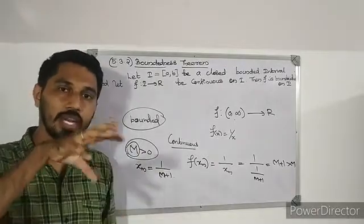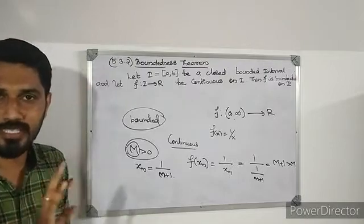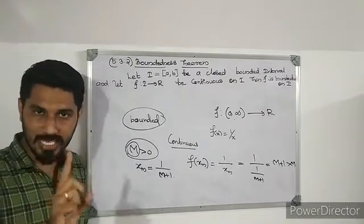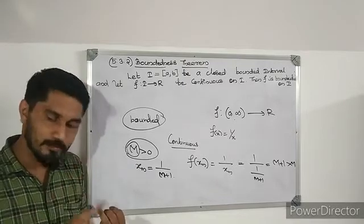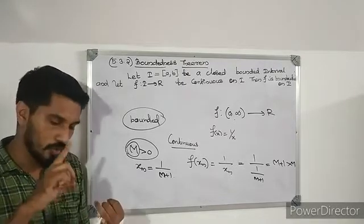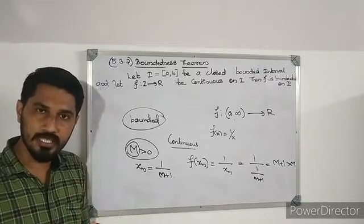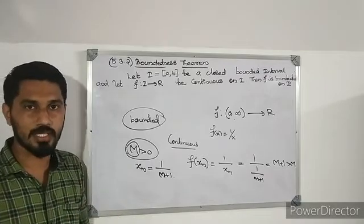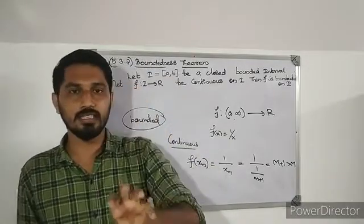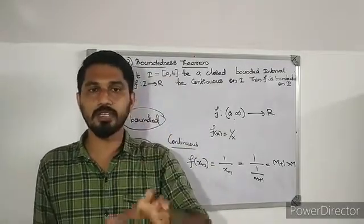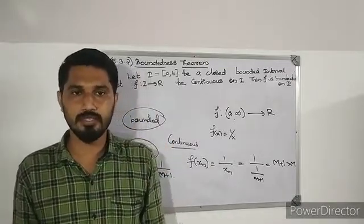What we have to show is: given an interval I, if we define a continuous function on I — a closed and bounded interval — then that function must be bounded. A continuous function defined on a closed and bounded interval is bounded.